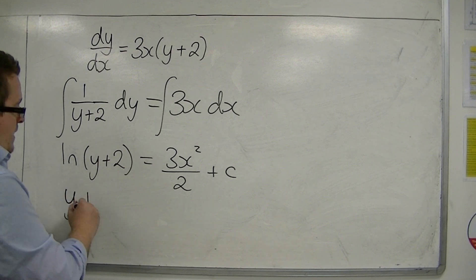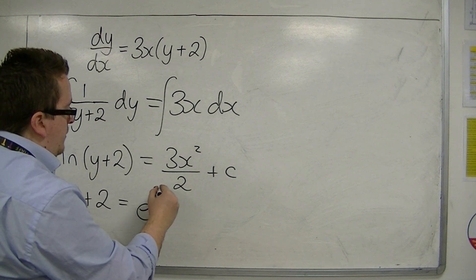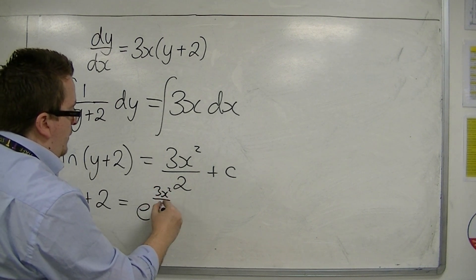So, if I e both sides, then I get y plus 2 is equal to e to the 3x squared over 2 plus c.